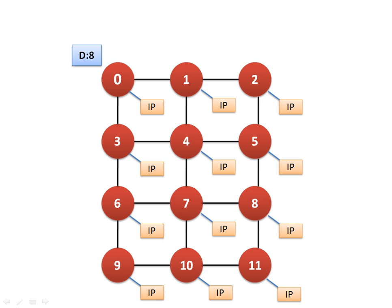Here we are taking an example. This node wants to send a packet to node 8. So how does XY routing work? Router 0 will calculate whether node 8 lies in its column or not. There is no 8 in its column, so it will determine which side node 8 lies on — right or left. They find out the row and column number of the destination router and compare it with their own. Node 0 finds that node 8 is not in the same column, so the packet has to go in the X direction.